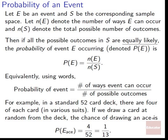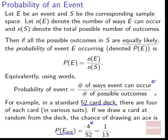For example, in a standard 52-card deck, there are four of each card in various suits. If we draw a card at random from the deck, the chance of drawing an ace is: there are four ways we can get an ace out of the deck — there are four aces — and there are 52 cards total, so 4 over 52, which simplifies to 1 over 13. This is the basic idea of probability: the number of ways it could occur divided by the number of all possible things that could happen.